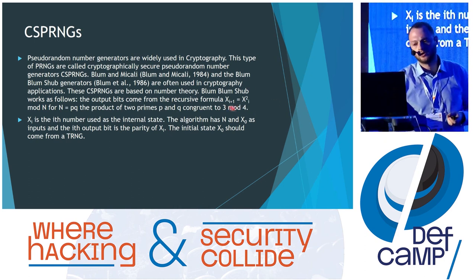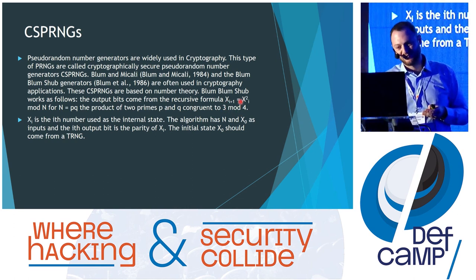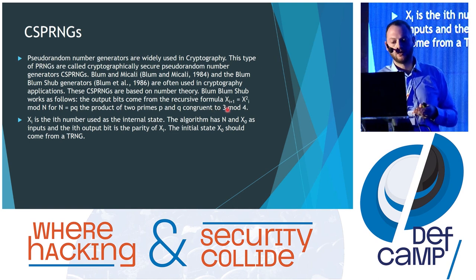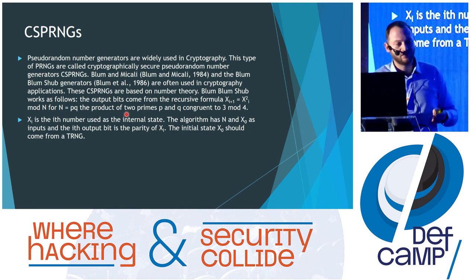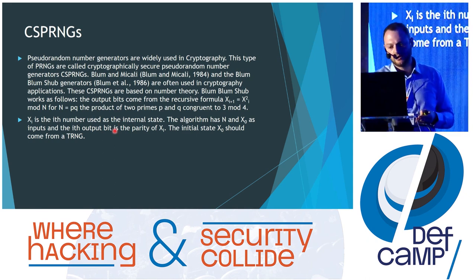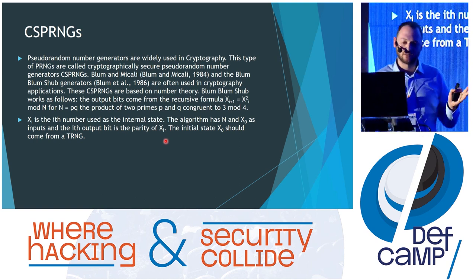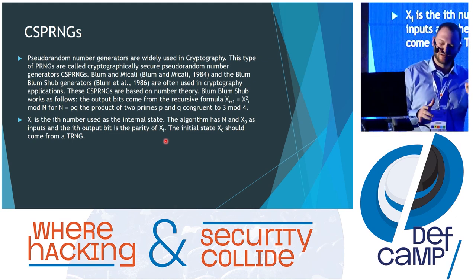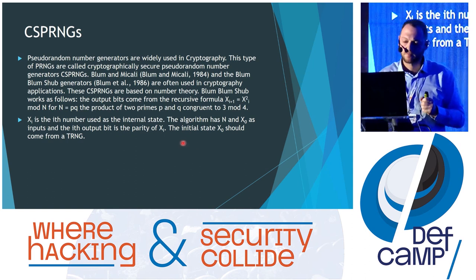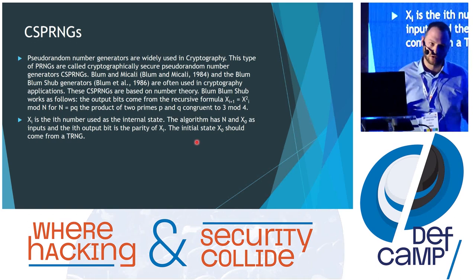Here is the example of how Blum-Blum-Shub works. The next output works recursively and is obtained from the previous one: x_{i+1} = x_i² mod n, where n is a product of two prime numbers. As input, it takes the seed x_0 and n. The very important thing is that the initial state x_0 must come from a true random number generator.